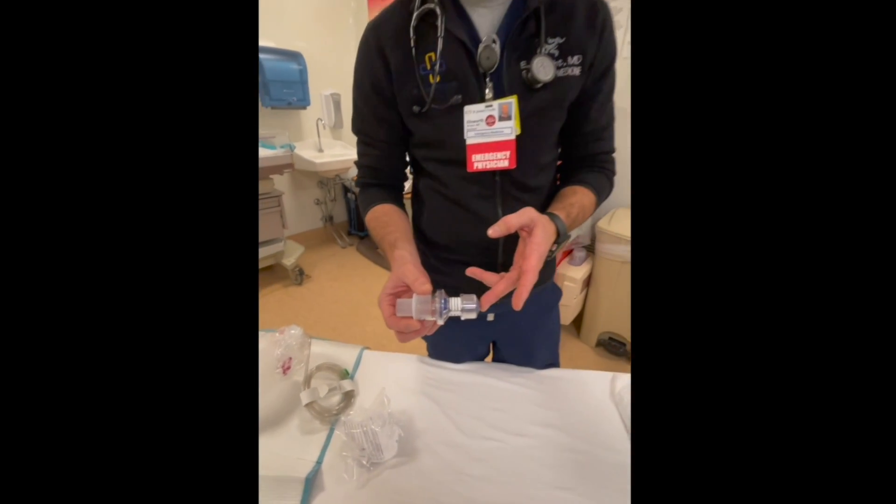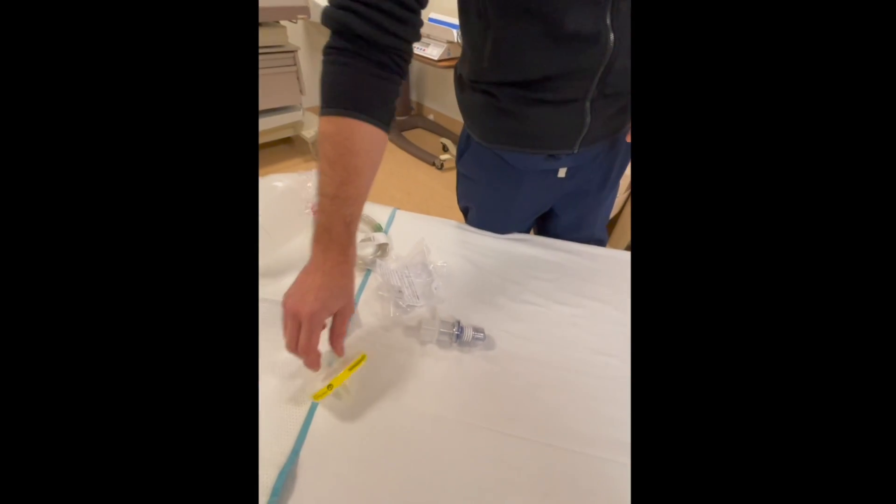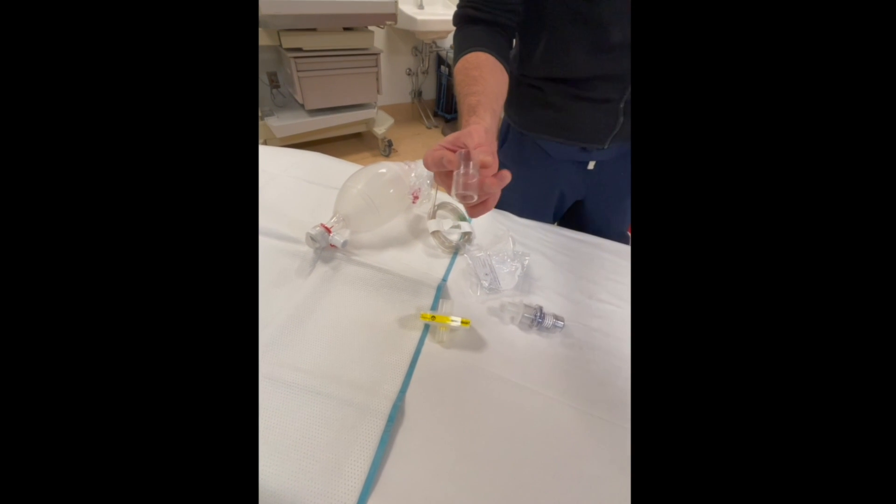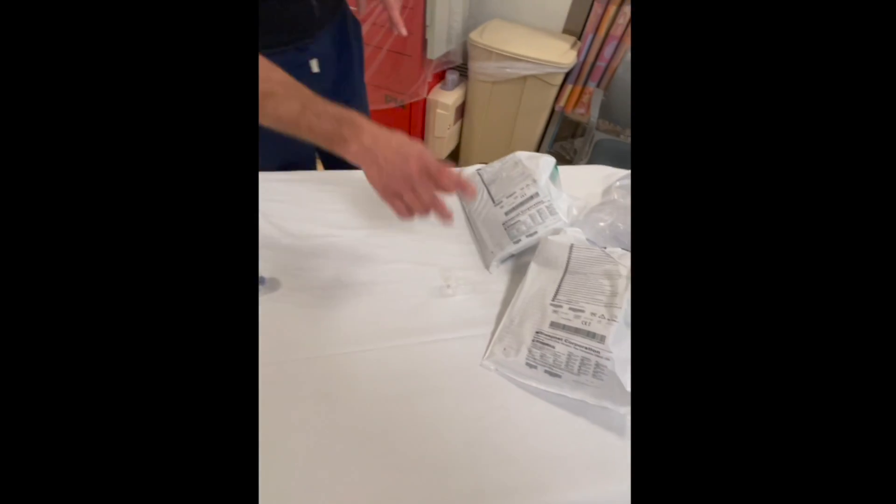You need a PEEP valve which is going to look like this, a viral filter which is going to look like this, potentially a connector which is in the BiPAP mask container, and then you need a BVM.